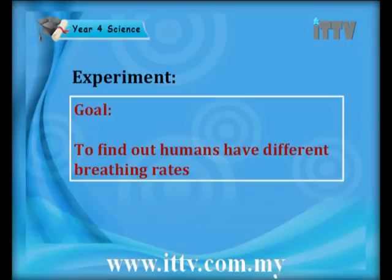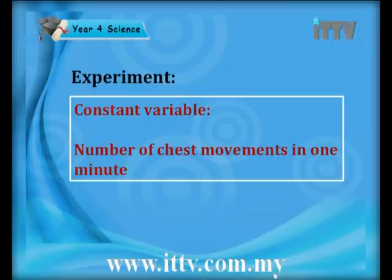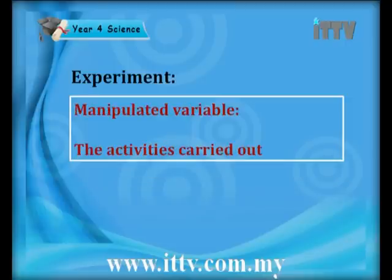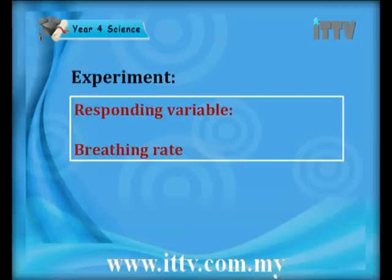Let's have a look at the following steps of an experiment to see what the breathing rate is and how it differs. The goal of the experiment is to find out whether humans have different breathing rates. The constant variable would be one minute recording of the chest movement. The manipulated variable would be the activities carried out. The responding variable would be your and your friend's breathing rate.